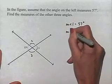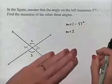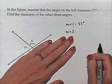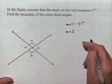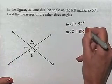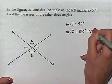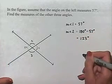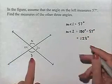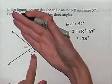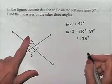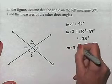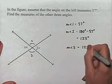To find the measure of angle 2, we notice that angle 2 together with the 57 degree angle forms a straight angle, meaning they are supplementary to each other. So we can find the measure of angle 2 by taking 180 degrees minus 57 degrees, which is a difference of 123 degrees. Finally, angle 3 is a vertical angle with angle 2, so either way you look at it, the measure of angle 3 is also 123 degrees.